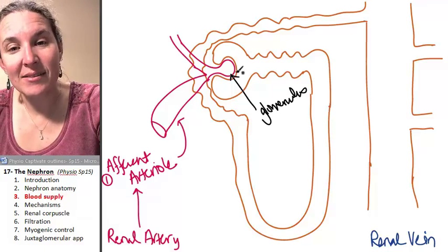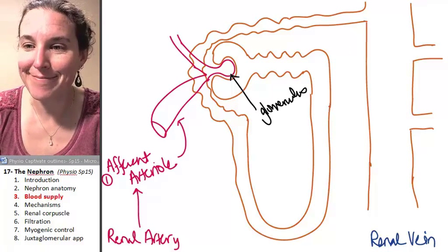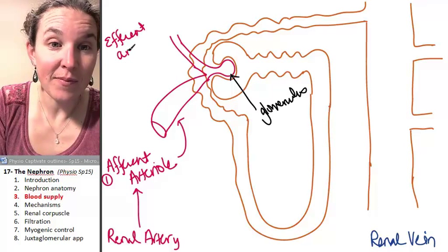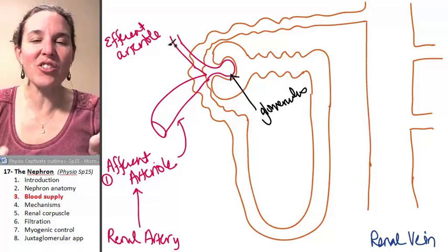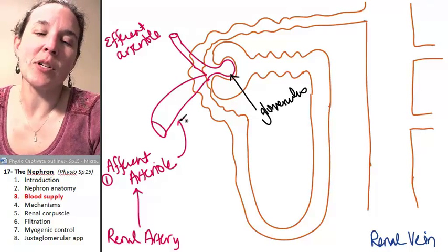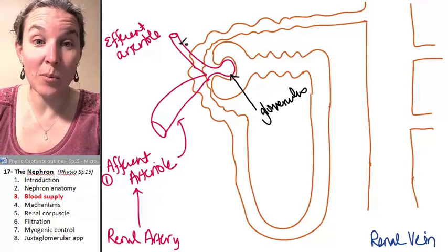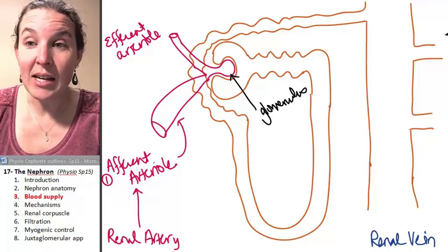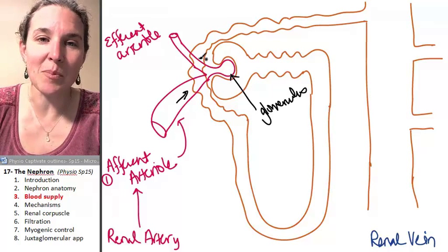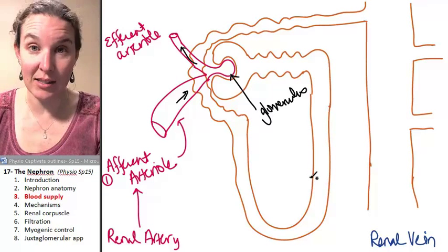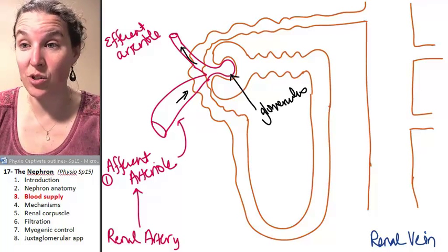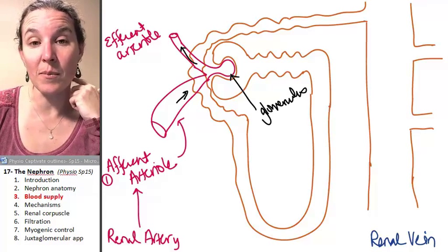The afferent arteriole feeds in — and guess who feeds out? The efferent arteriole. Notice the different diameter of the afferent arteriole as opposed to the efferent arteriole. Blood comes into the glomerulus through the afferent arteriole, but now it has a much smaller exit route through the efferent arteriole. That's very significant for understanding nephron function.